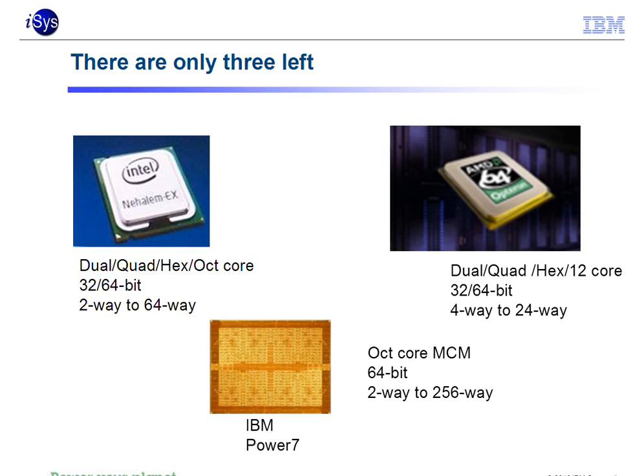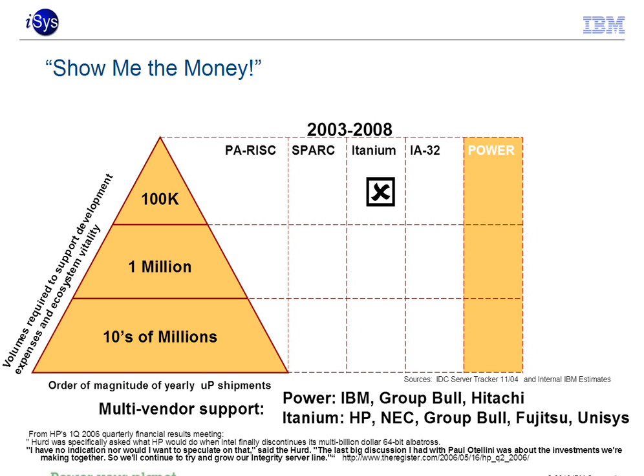It has nothing to do with the technology — both are great technology and we sell a lot of both. It's about being able to ship tens of millions of chips so you can afford R&D, new fabrication plants, marketing, and sales. If you can't sell tens of millions, you can't get there. Itanium doesn't even sell 100,000 chips a year — it's just about at the end of its life. HP paid Intel $10 billion to keep building Itanium.